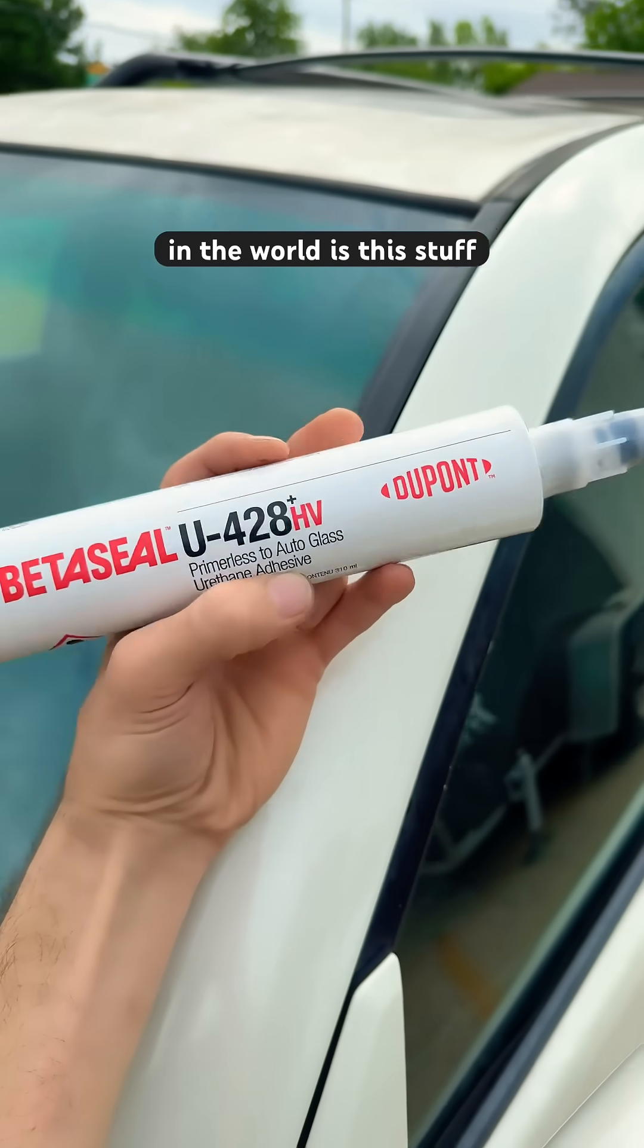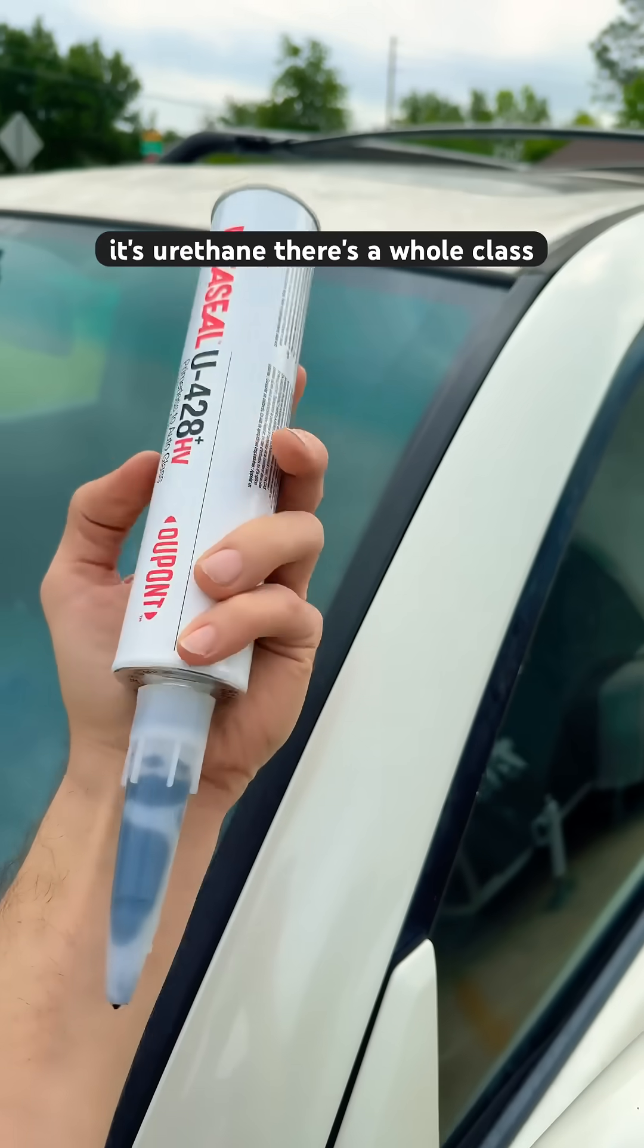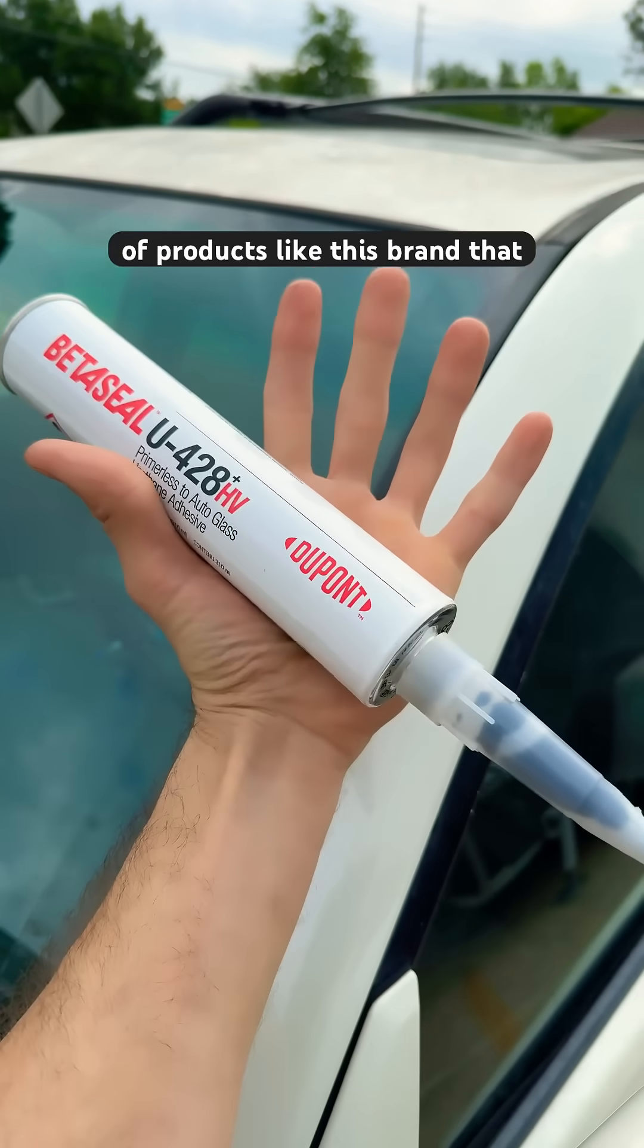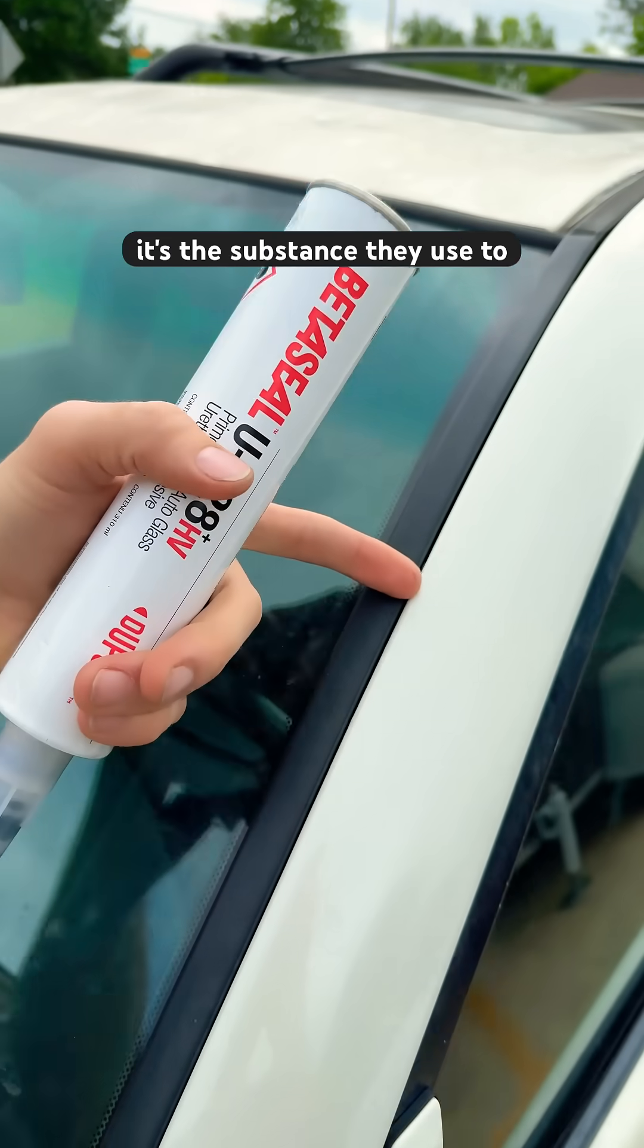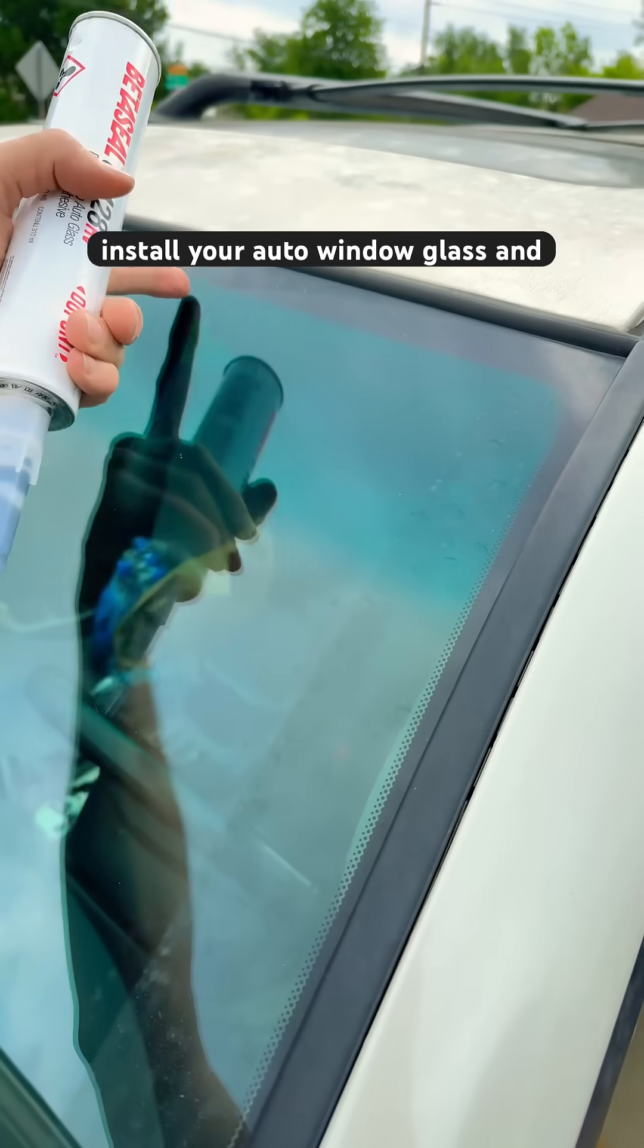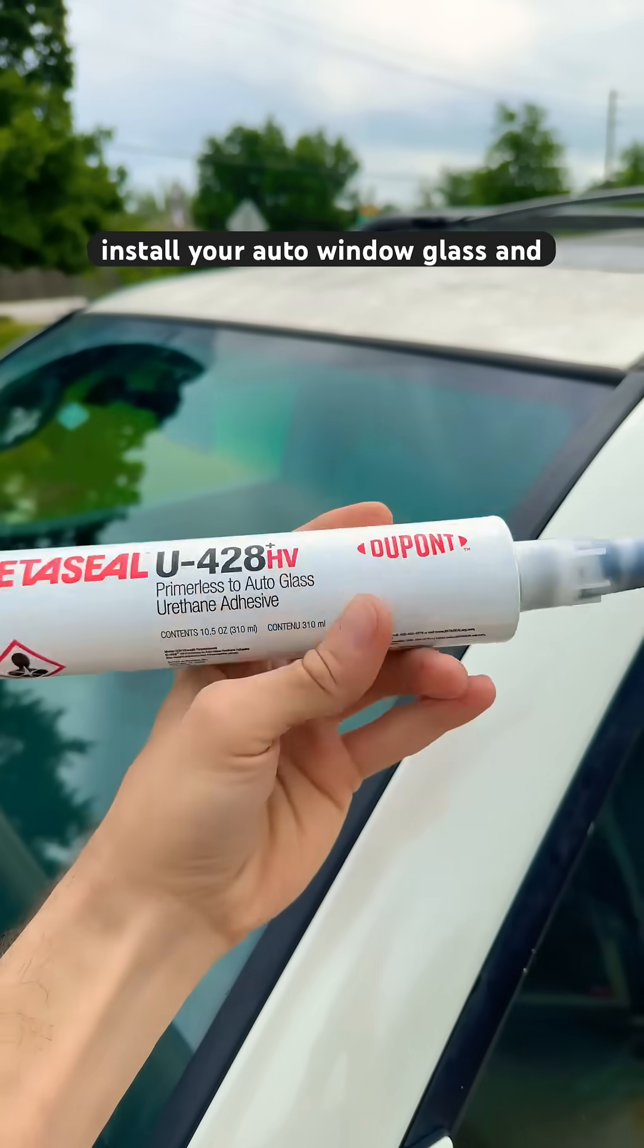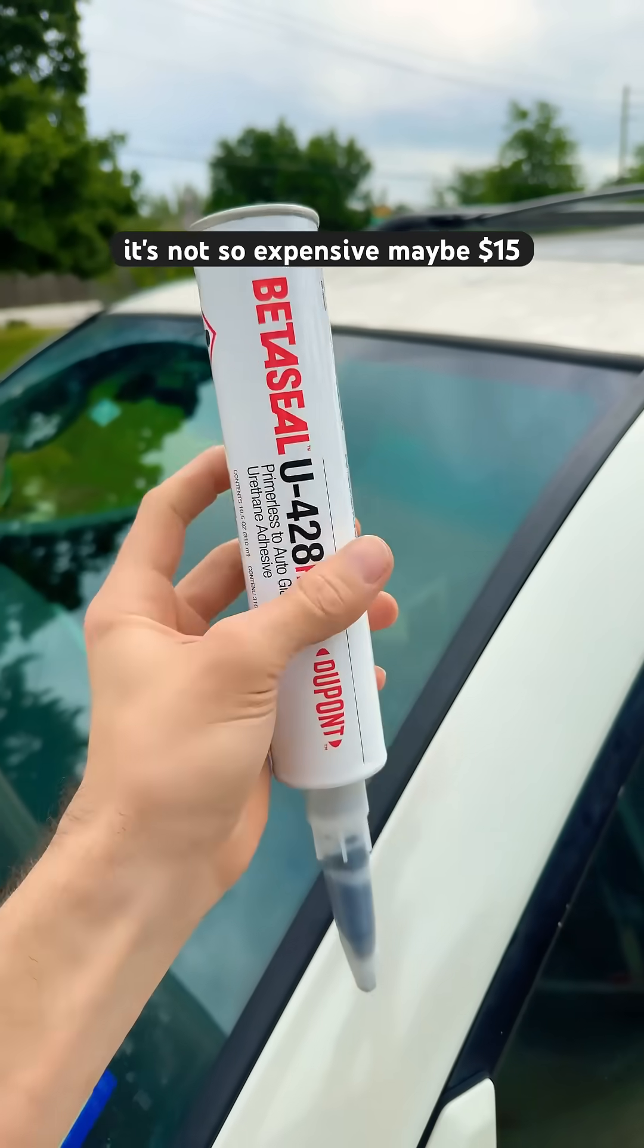So what in the world is this stuff? It's urethane. There's a whole class of products like this brand that it's the substance they use to install your auto window glass, and it's not so expensive, maybe $15.